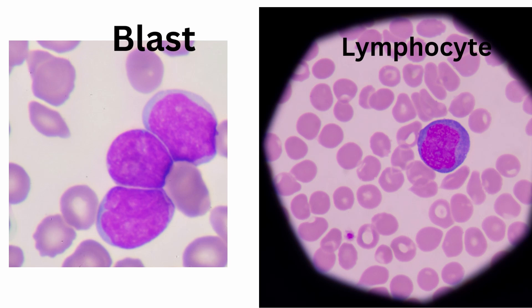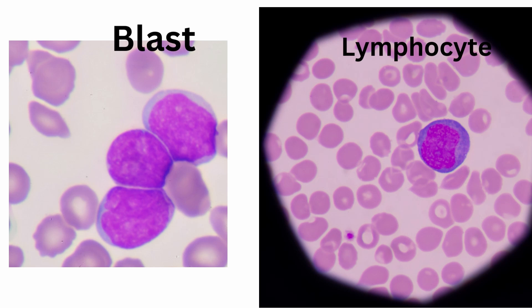I've got some blasts and lymphocytes side by side. As I was saying before, if you look at the chromatin pattern on the blast it's very smooth and lacy compared to the lymphocyte on the right. And with the NC ratio, you've got a lot more cytoplasm on the lymphocyte than you do on the blast on the left.